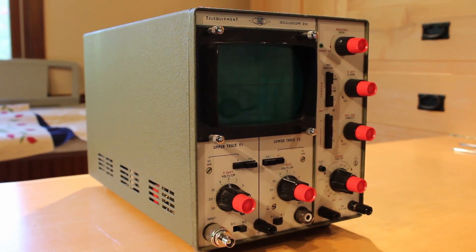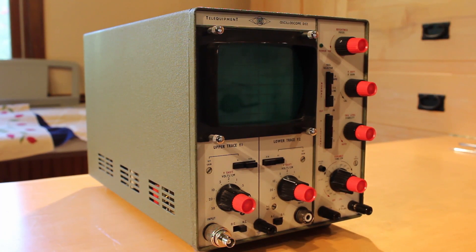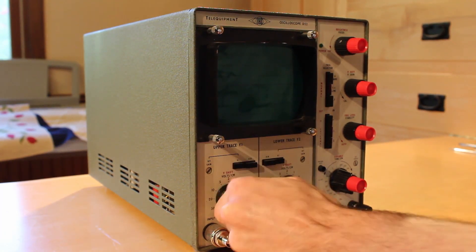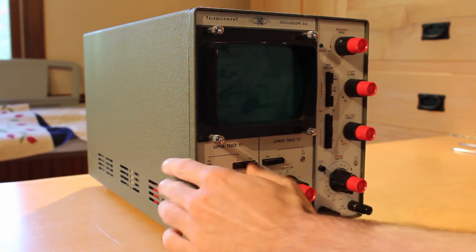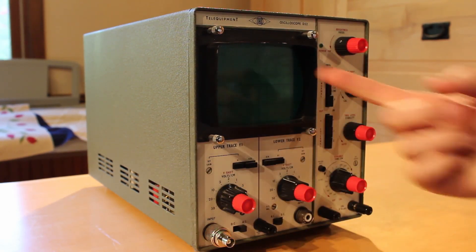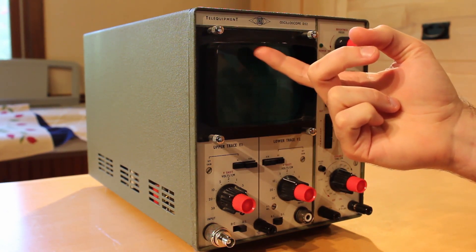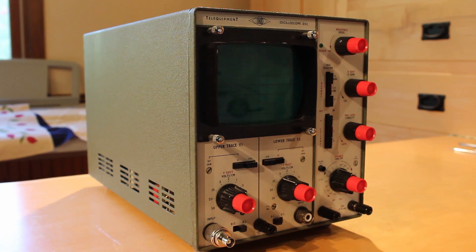So here it is in all of its 60 year old glory. It's in remarkably good shape for how long this thing has been around. All of the knobs have a wonderful feel to them. All of the buttons have a nice click to them. Nothing really seems broken. There's a small chip on the shroud around the CRT here, but other than that, it's in remarkably beautiful condition.